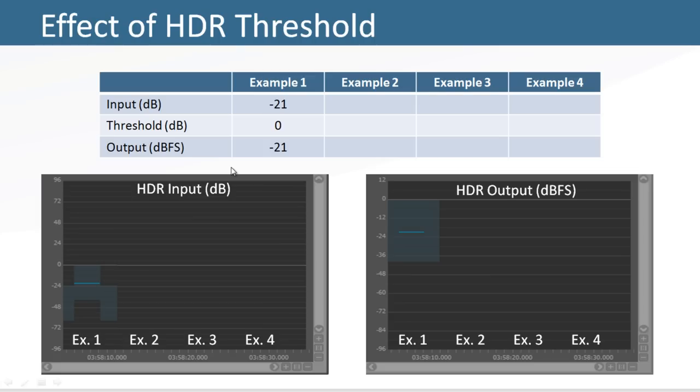The following is a series of four examples showing the effect of the threshold setting for a given sound. The first example shows that a sound playing at minus 21 dB with the threshold set to 0 dB will output at the same volume.